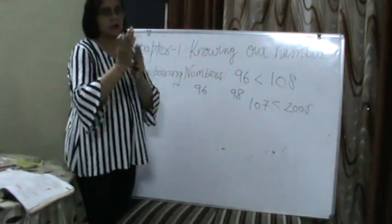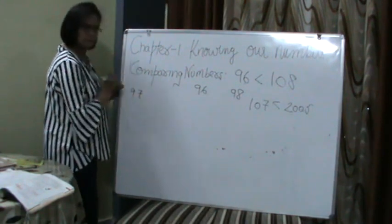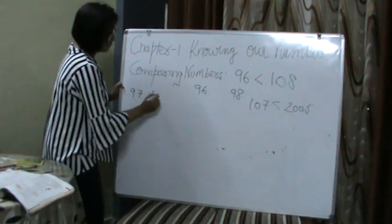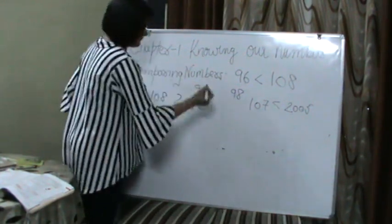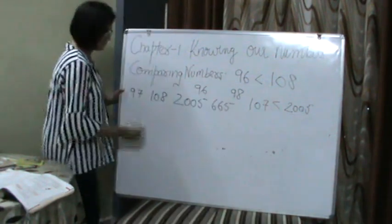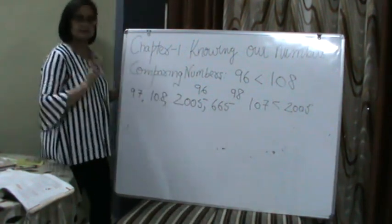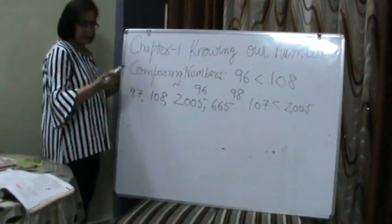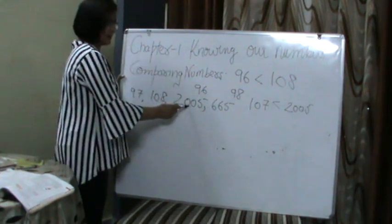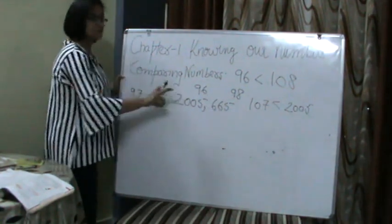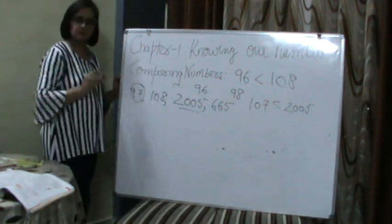In comparing numbers, first thing is to compare two numbers. Sometimes we have four numbers — suppose this is 97, this is 108, this is 2005, and suppose I give you one more number: six hundred sixty-five. I have given you these four numbers. You have to find the greatest number. First, we say them in words: 97, 108, 2005, six hundred sixty-five. Sabse bada number kya hua? 2005. Aur sabse chota? 97.